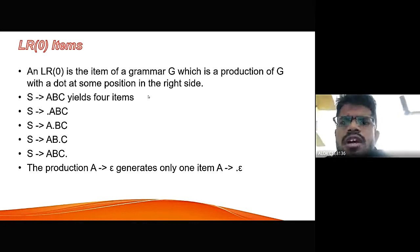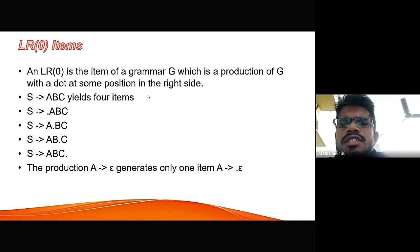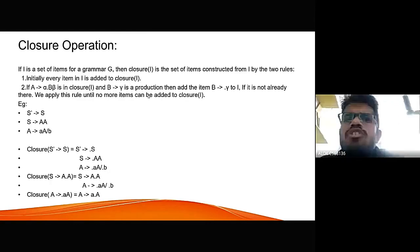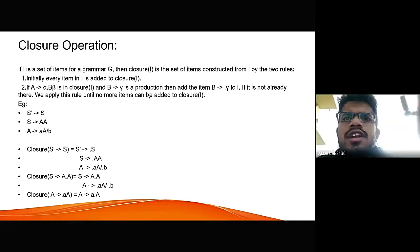Then we need to move the dot towards right till we reach the end position. Where till we reach till the end, like S gives A.bc, then S gives Ab.c, then S gives Abc dot. And the production of A gives epsilon generates only one item, A gives dot epsilon. The closure is the set of items constructed by I by two groups. First, initially every item in I is added to closure. Second, if A gives alpha dot B beta in closure, and B gives gamma in a production, then the item B gives dot gamma to I, if it is not already there. We apply this rule until no more items can be added to closure.